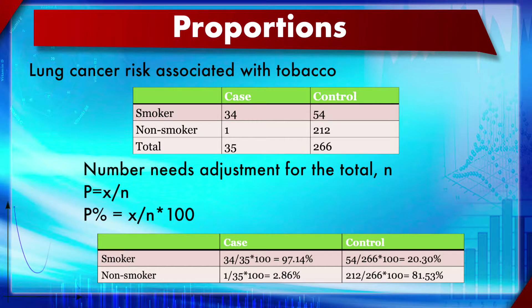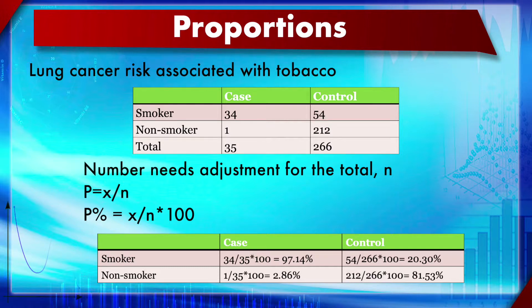For example, in a two-way contingency table from a case-control study examining whether smoking is associated with lung cancer, smokers versus non-smokers are the row groups while cases and controls are the columns. The values in two-way tables are always empirical frequencies observed in the study. The first value - 34 smokers among 35 cases - gives a proportion of 34 divided by 35. You can multiply by 100 to express it as a percentage.